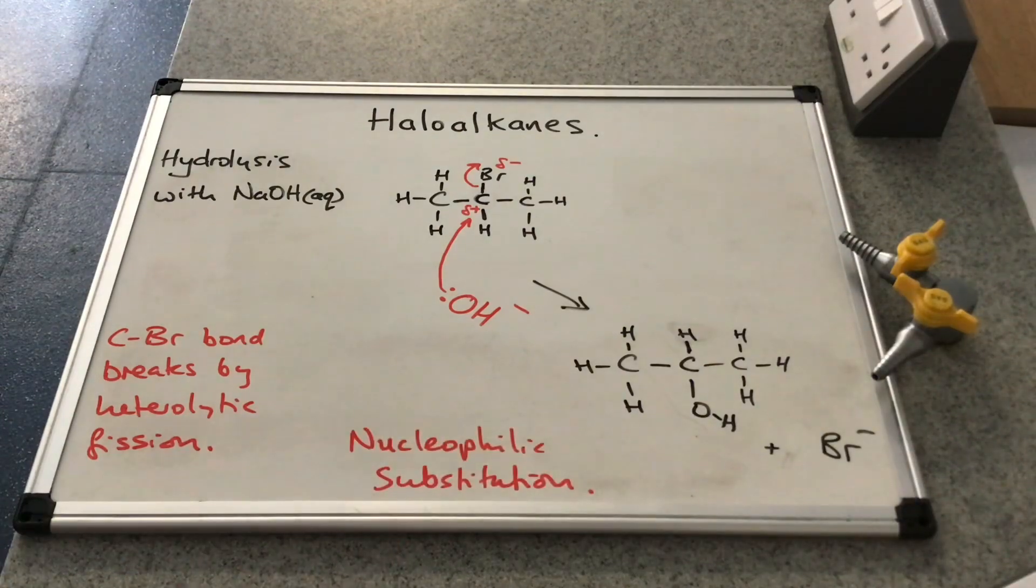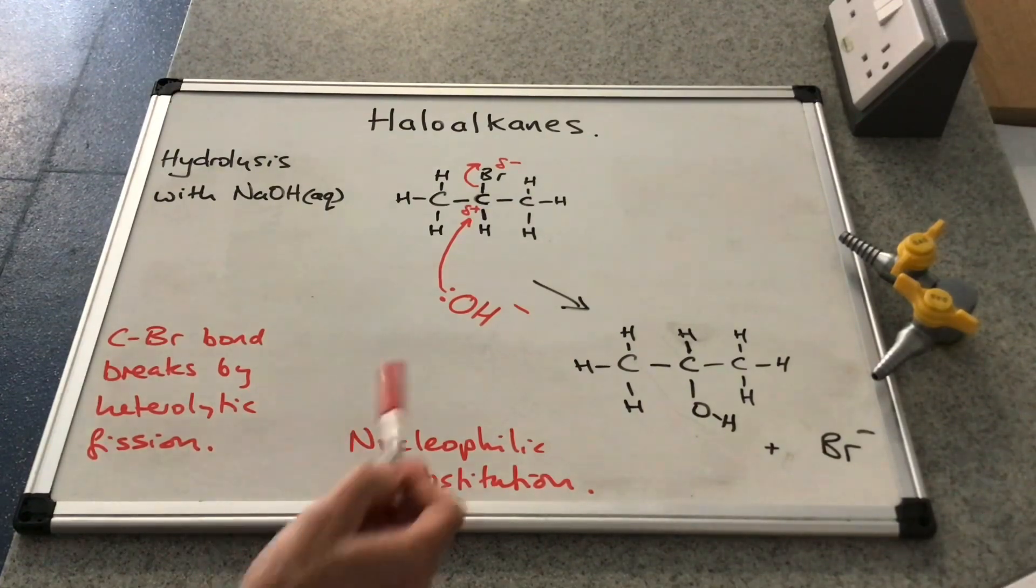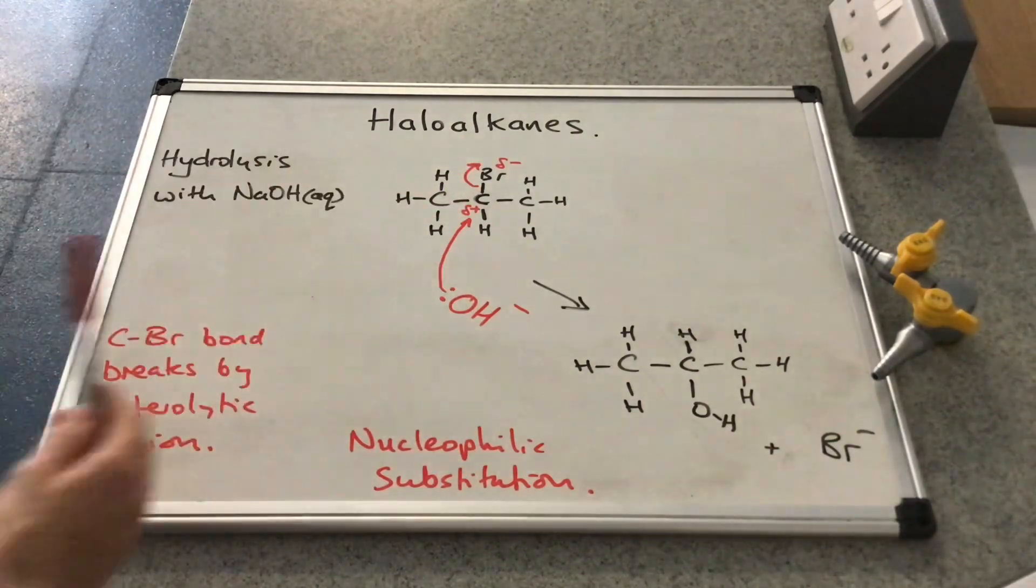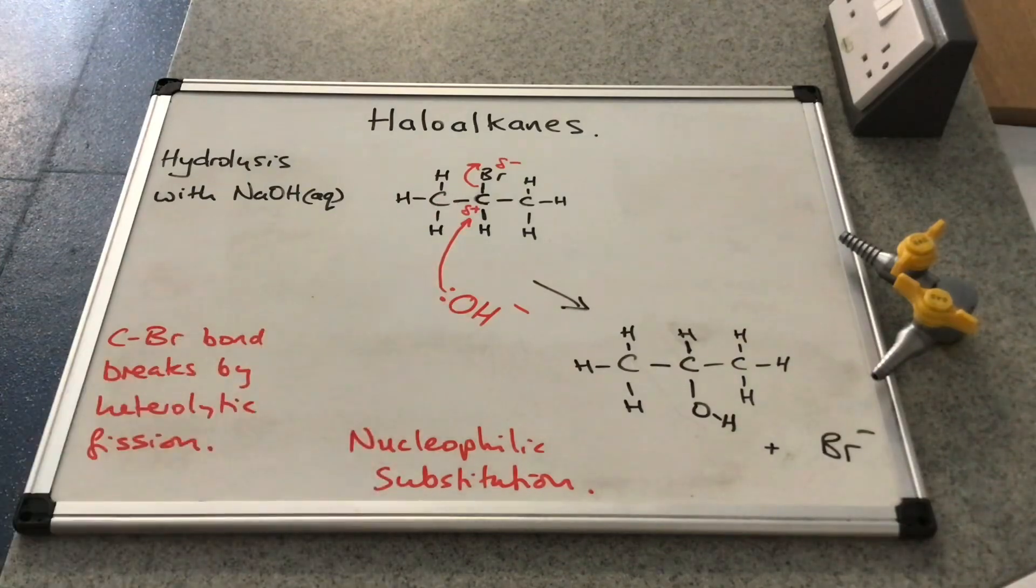And you can see I've written up that this is nucleophilic substitution. It's the name given to this mechanism. So nucleophilic, because it involves a nucleophile, an electron-pair donor. Substitution, because we've substituted a bromine atom, in this case, for the OH group, our hydroxyl group. So we've generated an alcohol from this reaction, and obviously that would be propan-2-ol.